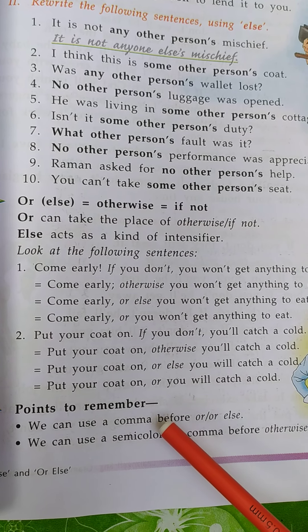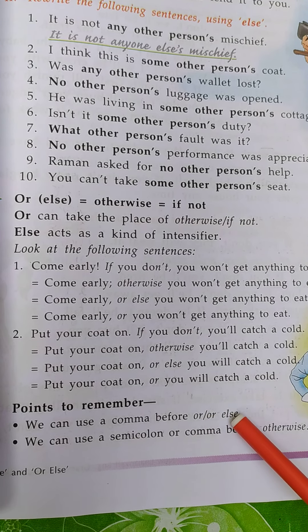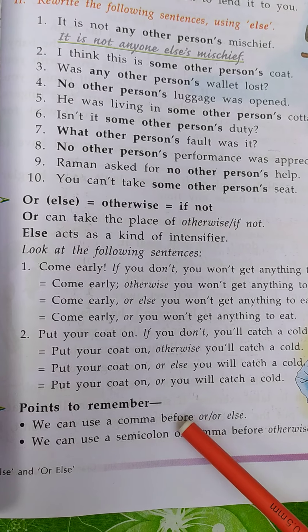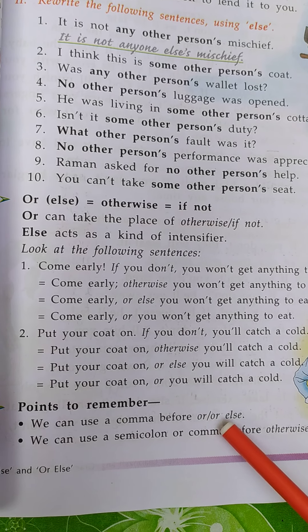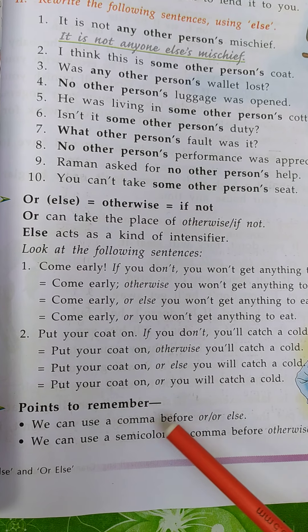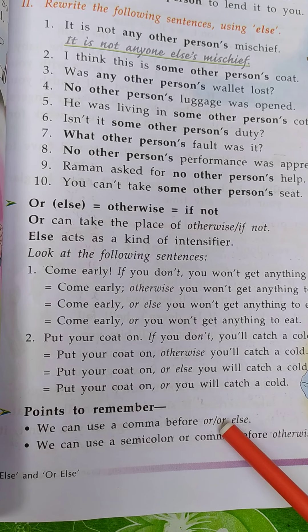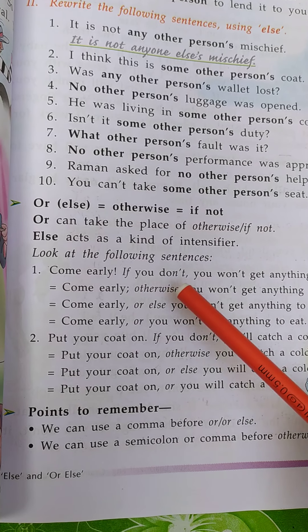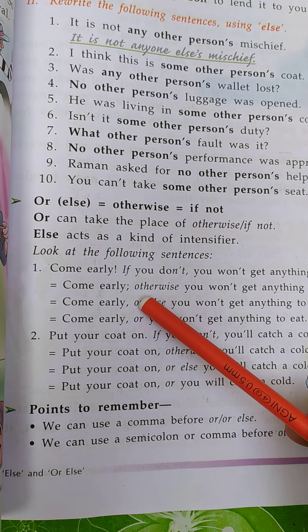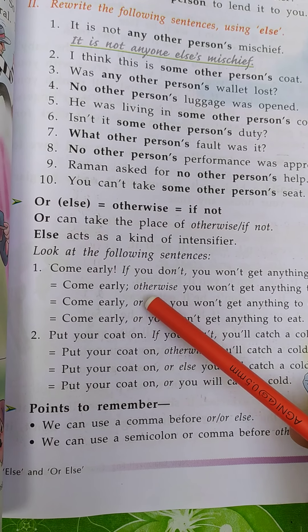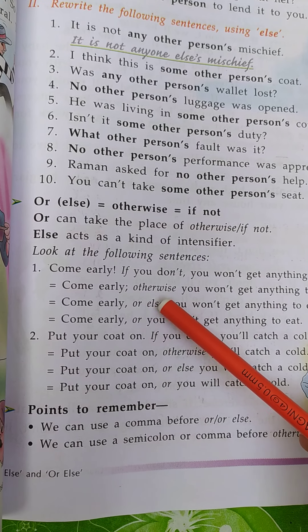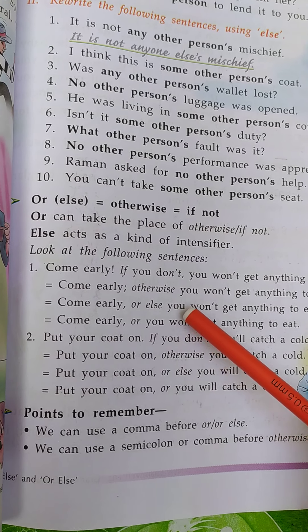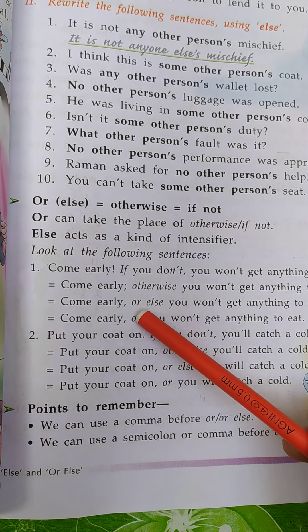Points to remember: We can use a comma before 'or' or 'or else.' हम 'or' या 'or else' के पहले एक comma लिख सकते हैं। First sentence में 'or' के पहले एक comma यूज हुआ है, और 'or else' के पहले भी एक comma यूज हुआ है।